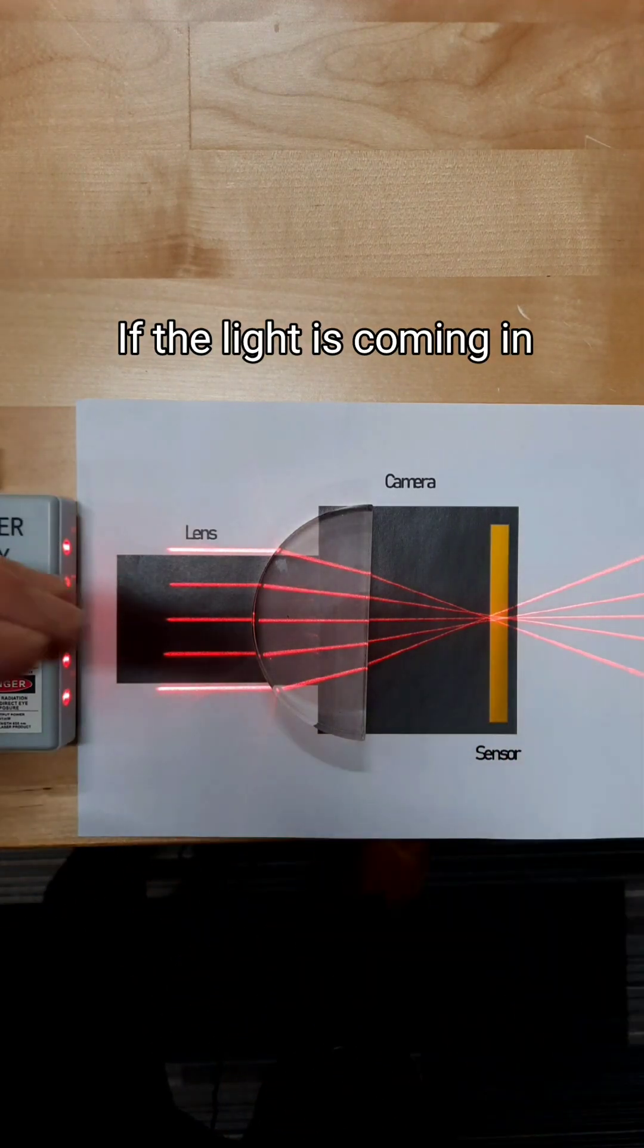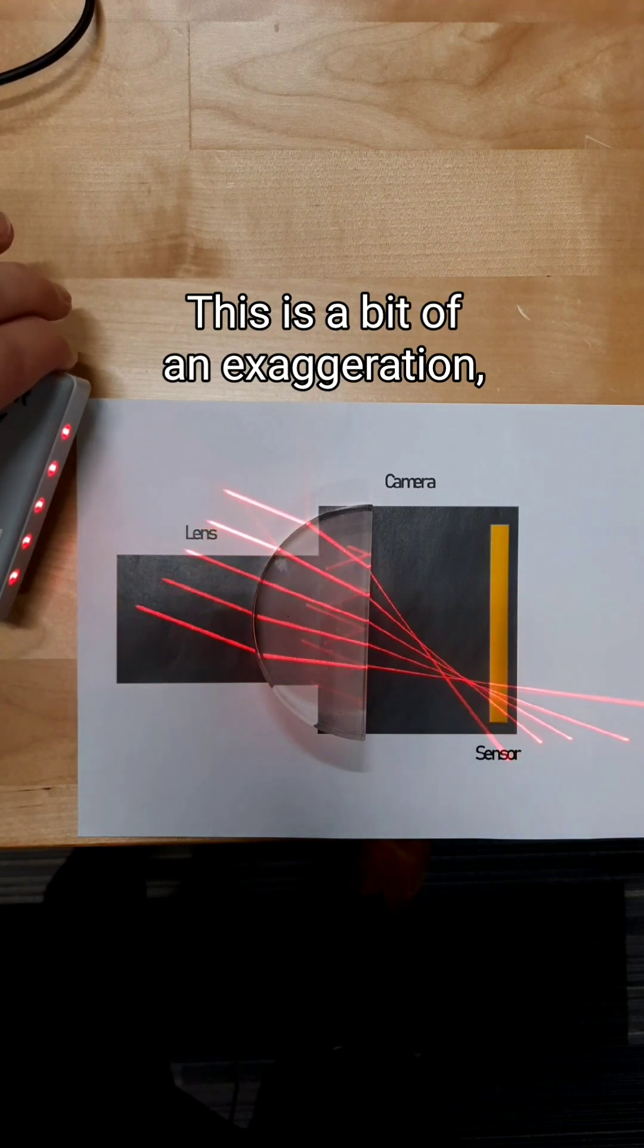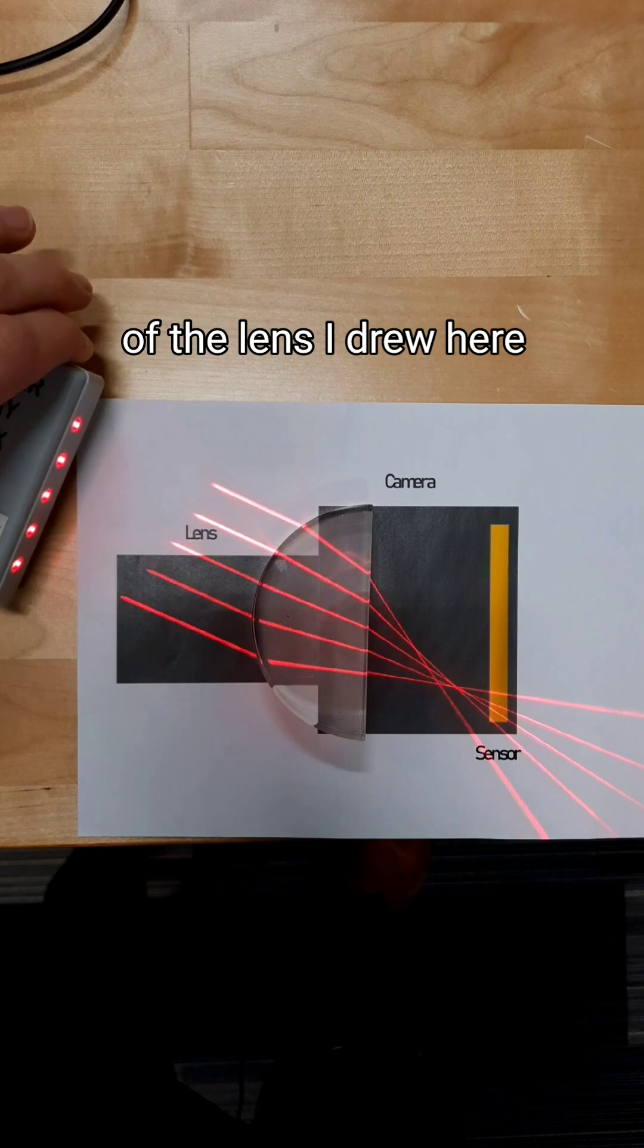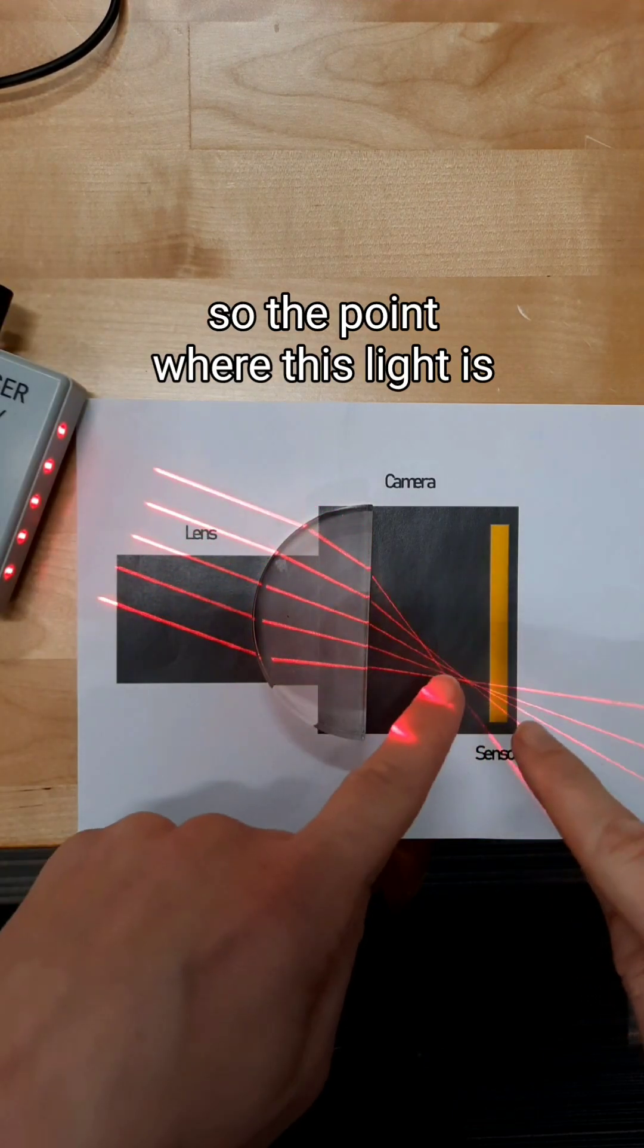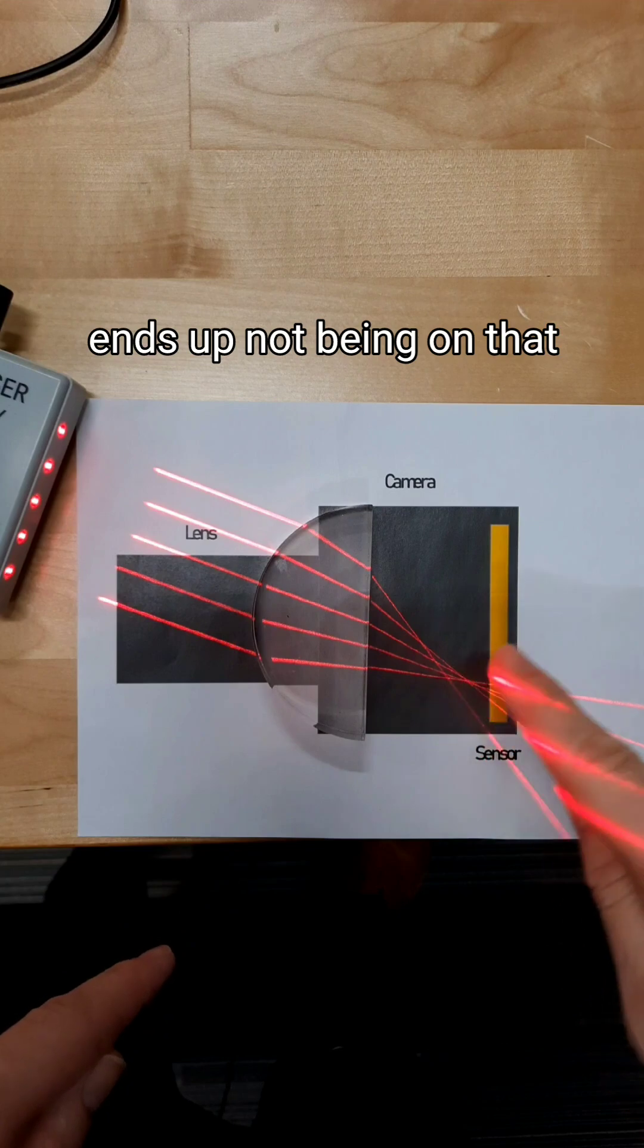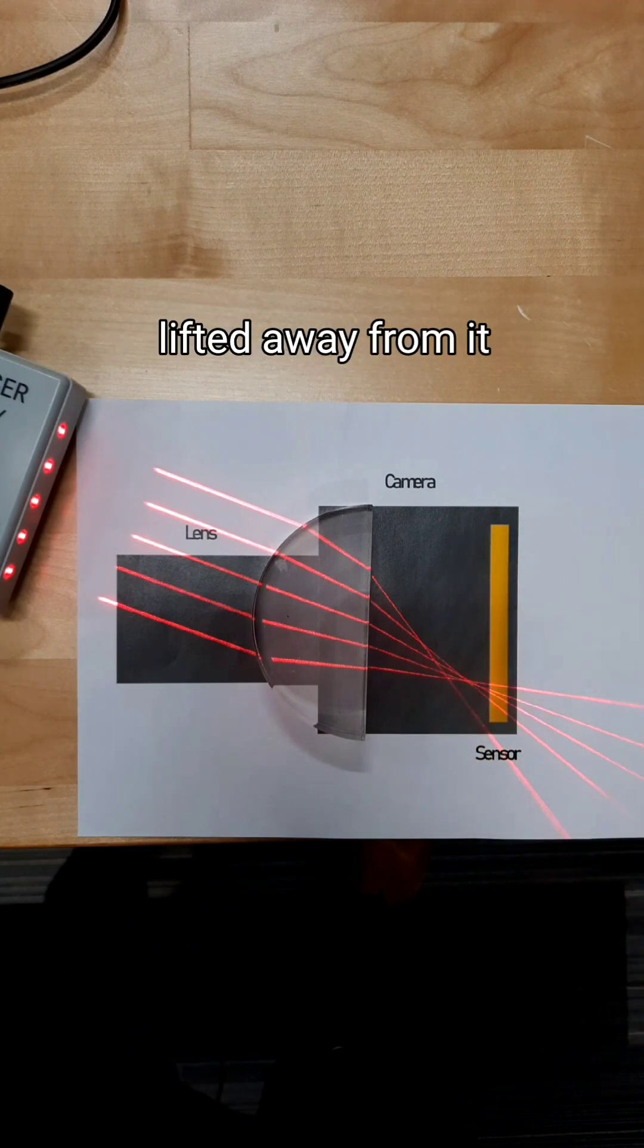If the light is coming in at different angles though, not straight on like this, this is a bit of an exaggeration. You see the light going outside of the lens I drew here, but the point of best focus, so the point where this light is brought to the smallest point, ends up not being on that flat image sensor anymore. It ends up being a little bit lifted away from it.